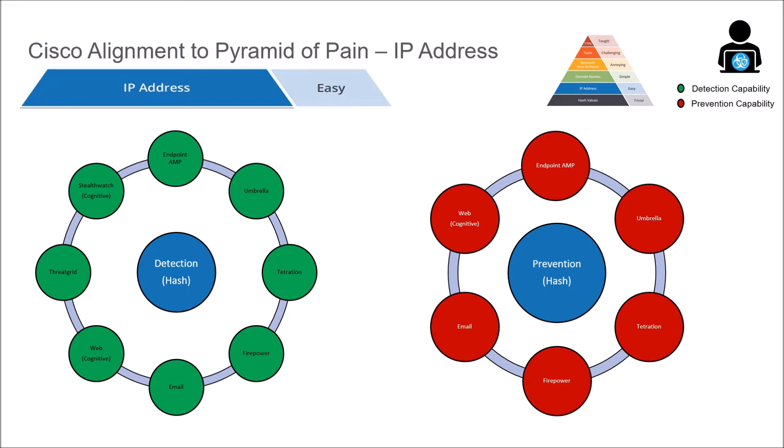In regards to detection, we've got Endpoint AMP, Umbrella, Tetration, Firepower, Email, Web, Threat Grid, and Stealthwatch — all provide a detection capability. For prevention, we have Endpoint AMP, Umbrella, Tetration, Firepower, Email, and Web.